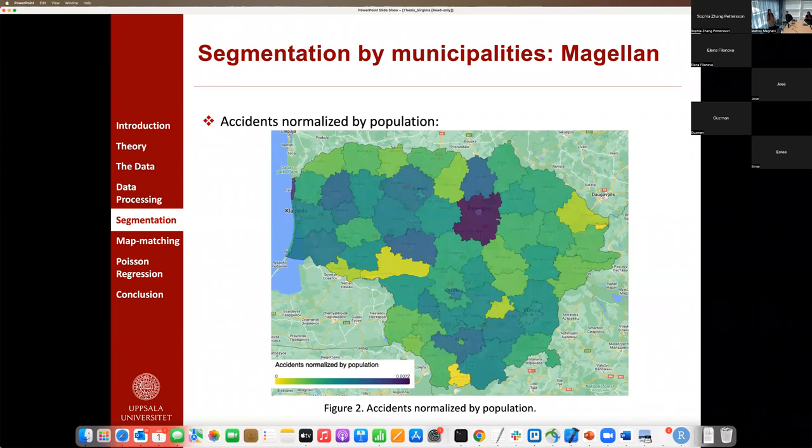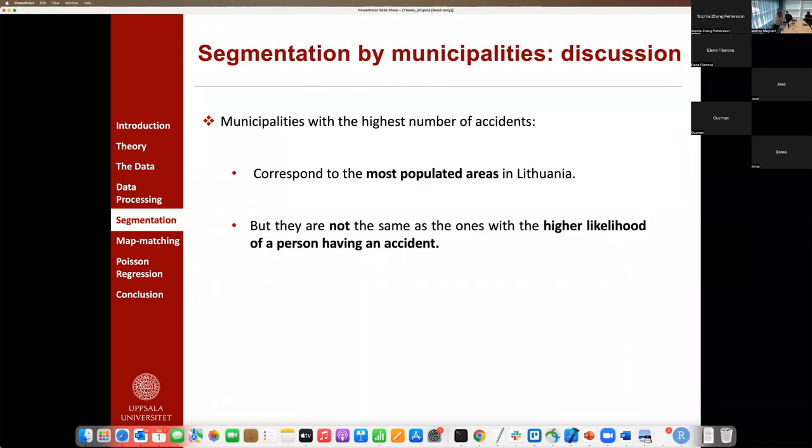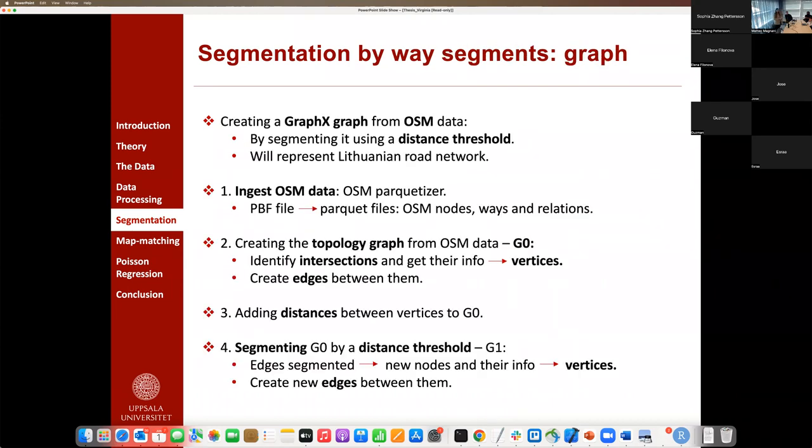In order to visualize better the previous results, we plotted it in a map where the relative frequency of accidents were scaled with colors. We can see that the municipalities with the highest number of accidents correspond to the most populated areas. In another analysis, we normalize the accidents by population. Discussing these results, we can say that the municipalities with the highest number of points corresponds to the most populated areas in Lithuania, but they are not the same as the ones with the higher likelihood of having an accident.